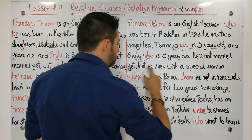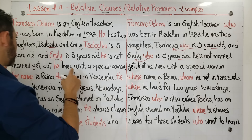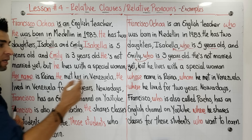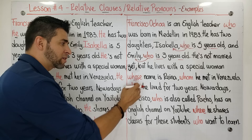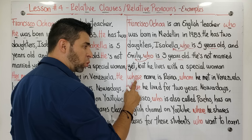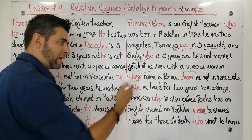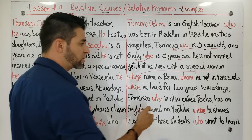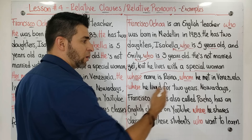Let's continue: 'He's not married yet, but he lives with a special woman whose name is Reina.' Look at what we have here compared to the first version where it said 'her name is Reina.' In this case I was using a possessive. 'Whose' means 'cuyo' or 'cuya' — we're talking about this special woman whose name is Reina. This 'whose' refers to the special woman to avoid repeating her.